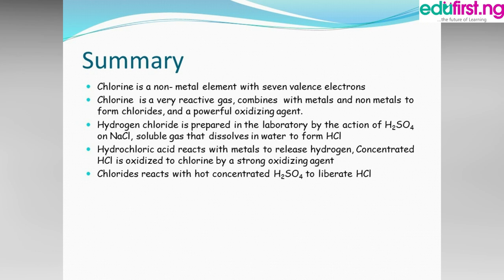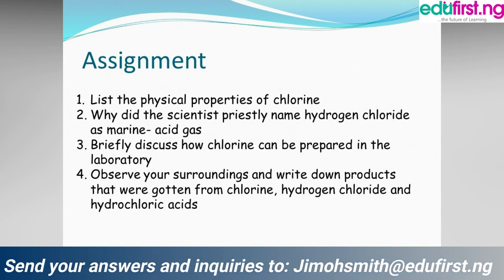In summary: Chlorine is a non-metal element with seven valence electrons. It is a very reactive gas that combines with metals and non-metals to form chlorides and is a powerful oxidizing agent. Hydrogen chloride is prepared in the lab by the action of H₂SO₄ on sodium chloride. Hydrochloric acid reacts with metals to release hydrogen. Concentrated HCl is oxidized to chlorine by a strong oxidizing agent. Chlorides react with concentrated H₂SO₄ to liberate hydrogen chloride. I hope you try the assignments listed — thank you for today's class.